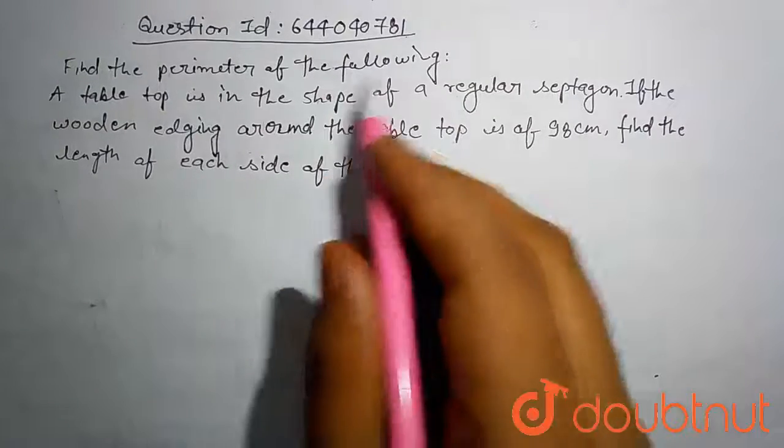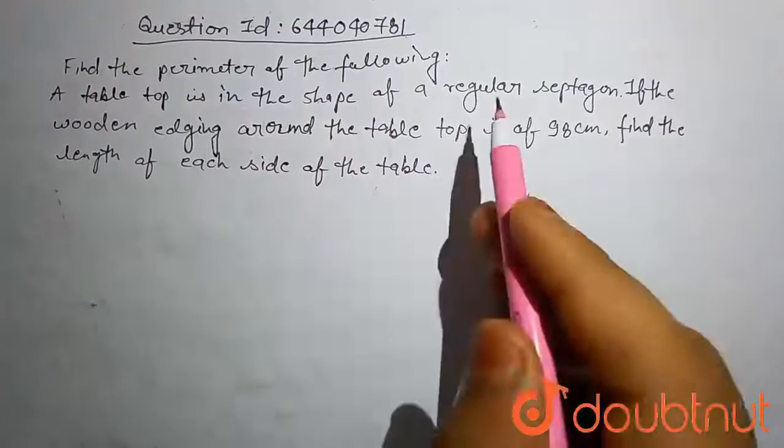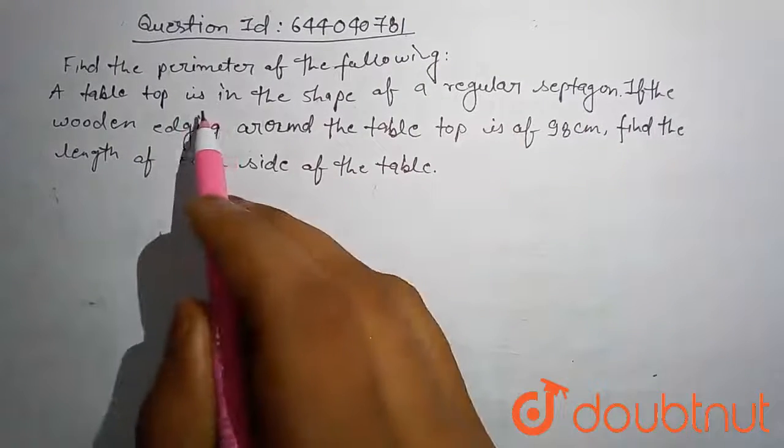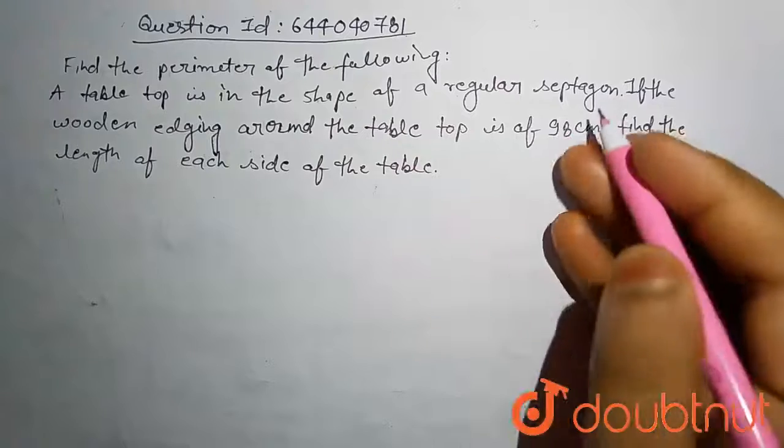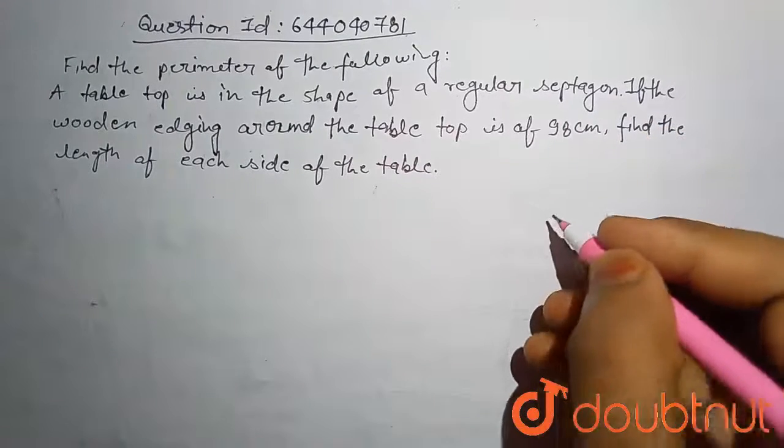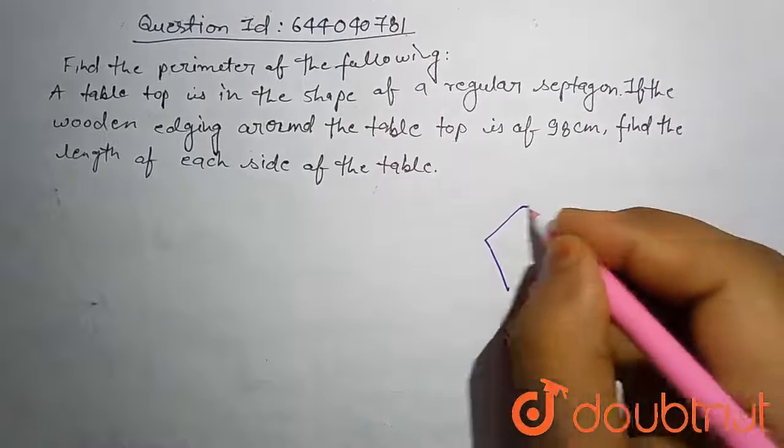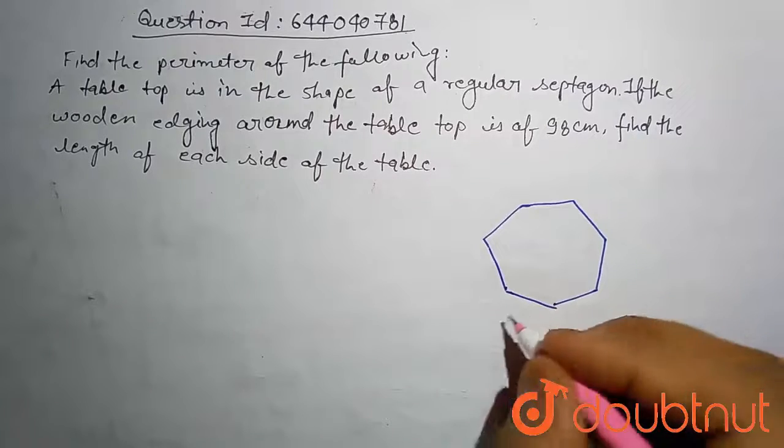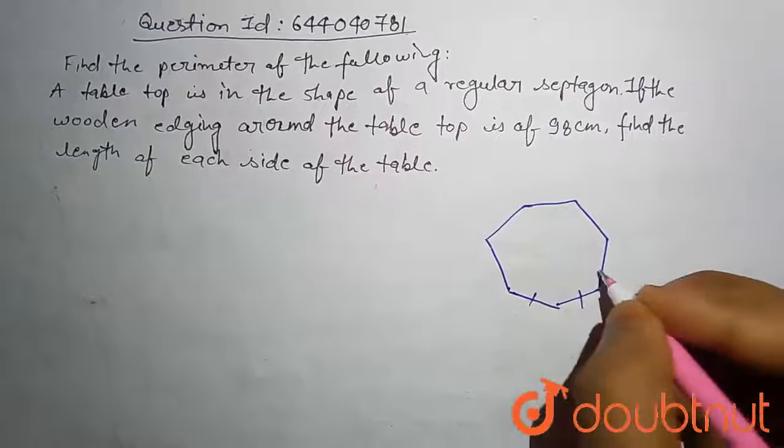Find the perimeter of the following: A tabletop is in the shape of a regular septagon. If the tabletop is a regular septagon, it means all sides are equal. Let's draw the regular septagon. This is a regular septagon; all lengths are equal.